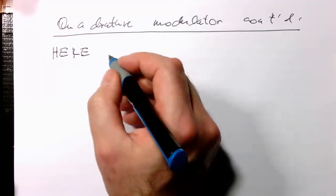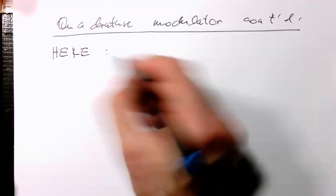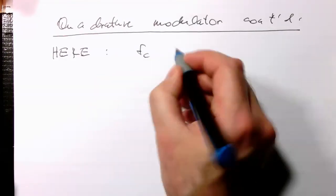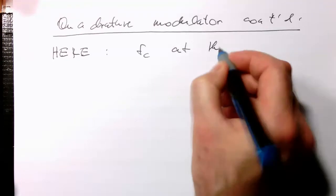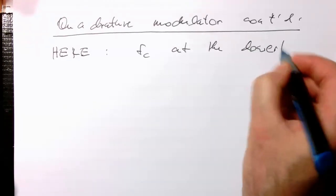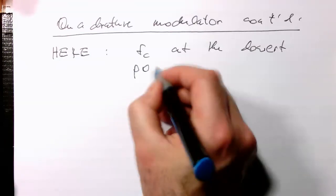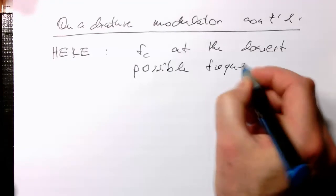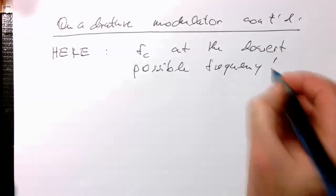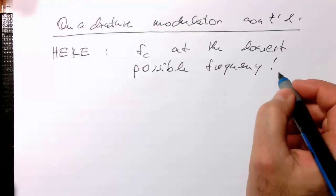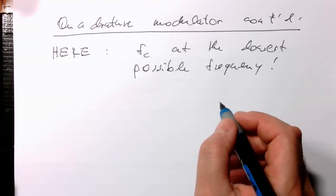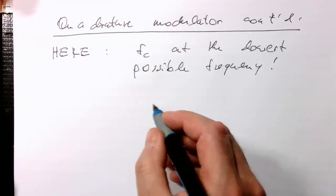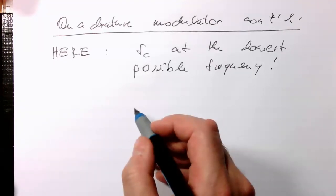We run fc, the carrier frequency, at the lowest possible frequency. What does that mean? The lowest possible frequency is essentially double the sampling rate of our complex time series. So the idea is...